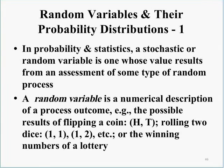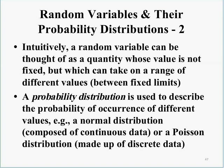Now let's turn to random variables and their probability distributions. A stochastic or random variable is one whose value results from an assessment of some type of random process — a numerical description of a process outcome. Examples include the possible results of flipping a coin, rolling two dice, or the winning numbers on a lottery. A random variable can take on a range of different values between some fixed limits. A probability distribution describes the probability of occurrence of different values — for example, a normal distribution for continuous data or a Poisson distribution for discrete data.